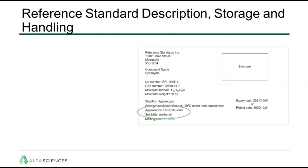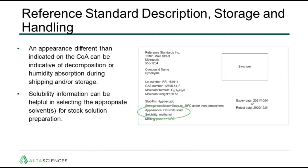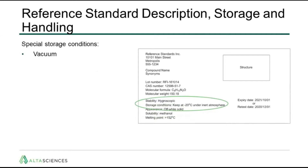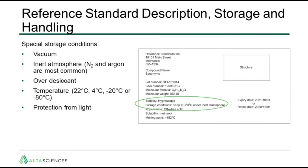Now let's look at reference standard description, storage, and handling information on the certificate of analysis. An appearance different than indicated on the COA can be indicative of possible decomposition or humidity absorption during shipping or storage, so it's important to compare the COA information with what you actually receive in your vial. Solubility information can be helpful in selecting appropriate solvents for stock solution preparation. There may be special storage conditions required such as vacuum or inert atmosphere — nitrogen and argon are most common. The compound may need to be stored over desiccant if it is hygroscopic. Different temperature requirements and protection from light may also be required during storage and/or handling.